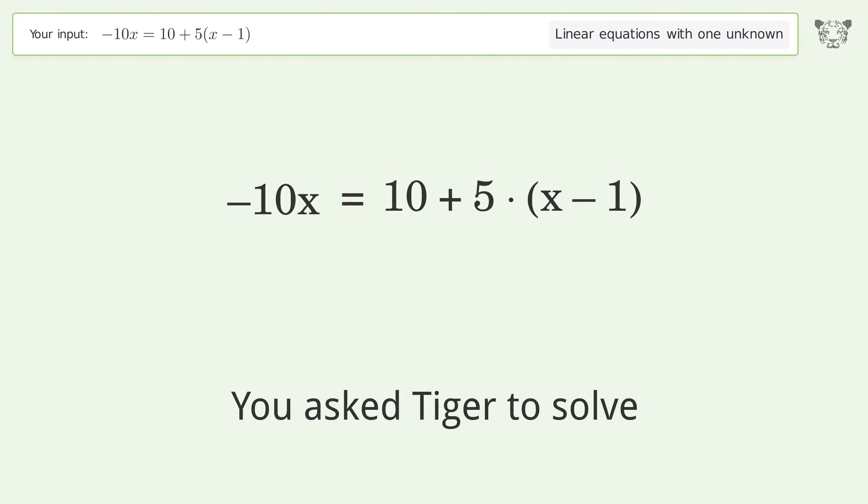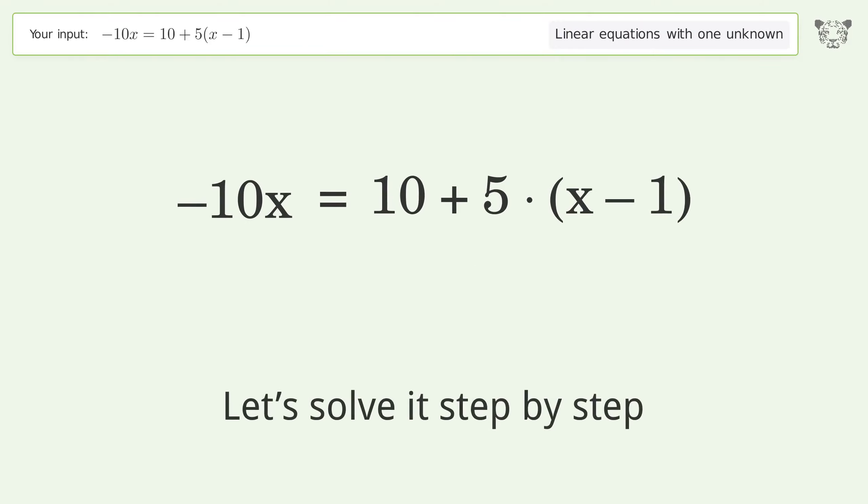You asked Tiger to solve this. This deals with linear equations with one unknown. The final result is x equals negative one over three. Let's solve it step by step.